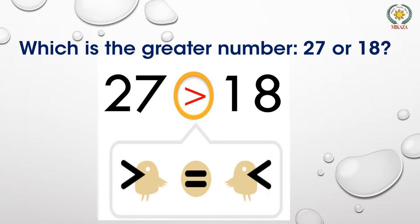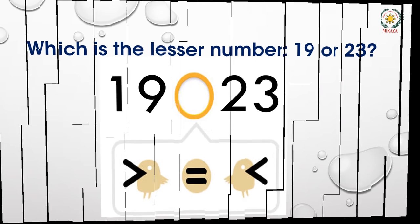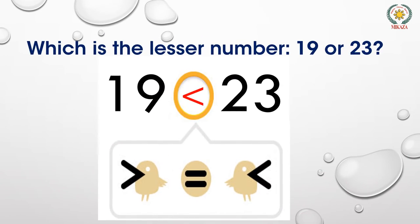Which is the less number: 19 or 23? We will tell you which number is smaller. 19 is less than 23.